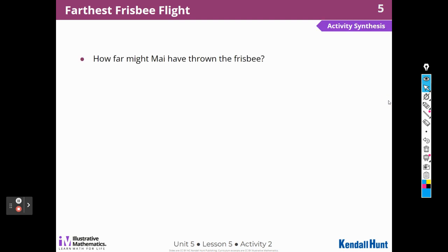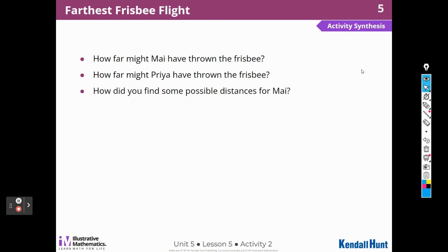How far might Mai have thrown the frisbee? Well, we just answered that — she could have thrown it four meters, five meters, or 4.99 meters. How far might Priya have thrown the frisbee? Again, we did answer that: five and one thousandth, five and two thousandths, all the way up to five and nine thousandths. How did you find some possible distances for Mai? I could pick any number that was five or less, so there were lots of choices — five, four, four and seven-tenths, four and eight-tenths.